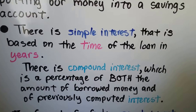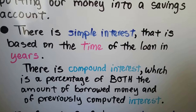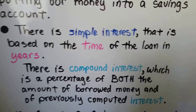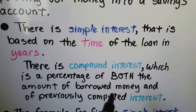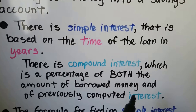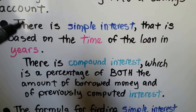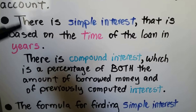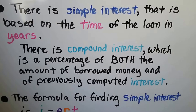There's also compound interest — that's a percentage of both the amount of borrowed money and the previously computed interest. Compound interest keeps building on itself; you find it by finding the previous interest and then adding interest to that interest. We're not doing that now. We're just doing simple interest that is based on time of the loan in years. We'll get into compound interest later.